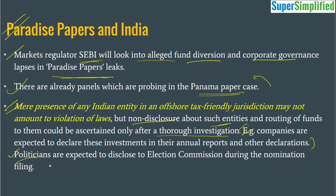That is what SEBI and the panels involved in this investigation will do — they will check which companies are listed in the leak and find out whether these things were disclosed by the companies or not. If it was disclosed, then it's perfectly fine; otherwise, they can take action. Some politicians are also named. Politicians are expected to disclose their earnings and connections with foreign entities or profit-making agencies before the Election Commission during their nomination filing. Union Minister Jayant Sinha is claiming that he has disclosed all these details and presently has no contact with these firms — he was working for them in the past. We cannot just say that a person is corrupt simply because their name has figured in the Paradise Papers leak.